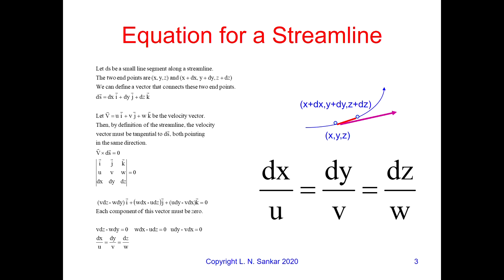From vector calculus, we know the cross product can be computed as a determinant: the first row is the unit vectors i, j, k; the next row is u, v, w; and the last row is dx, dy, dz. Evaluating the determinant gives a cross product vector with i, j, and k components, and its magnitude is 0. This means each component must equal 0: v·dz = w·dy, w·dx = u·dz, and u·dy = v·dx. Grouping these, we write dx/u = dy/v = dz/w. This is the equation of a streamline. If one knows u, v, w, one can integrate to find x, y, z.